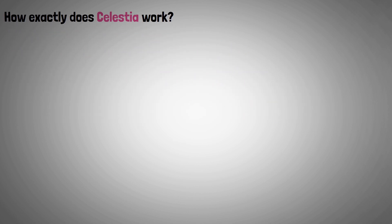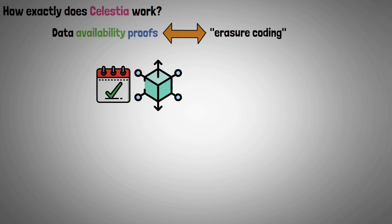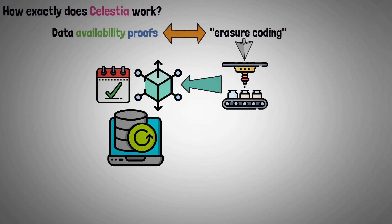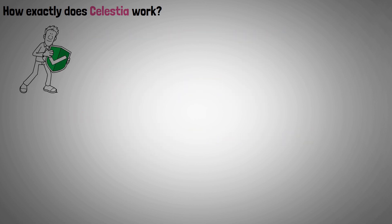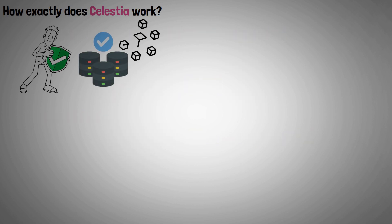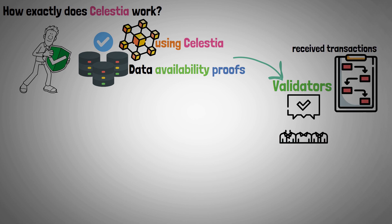Now we can present how exactly Celestia works. Data availability proofs are based on an approach called erasure coding, which expands the block data that is currently present. Erasure coding fills the extra space in a block, enabling recovery of the entire block as long as 50% of it is accessible. Celestia guarantees data availability for any chain that builds on top of it, thanks to data availability proofs. With this information, validators can concur on and arrange the received transactions, fostering consensus.